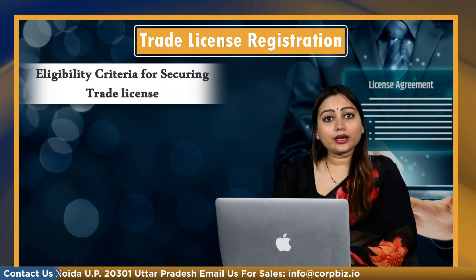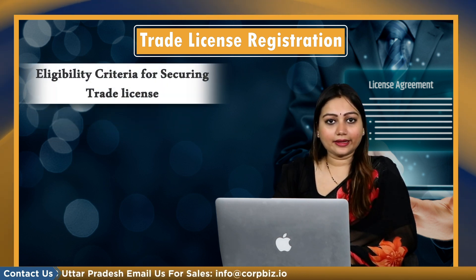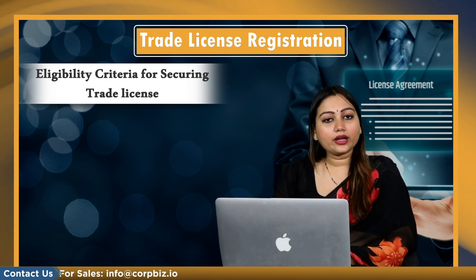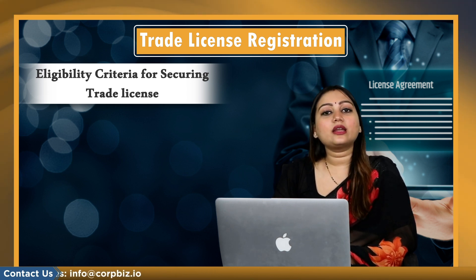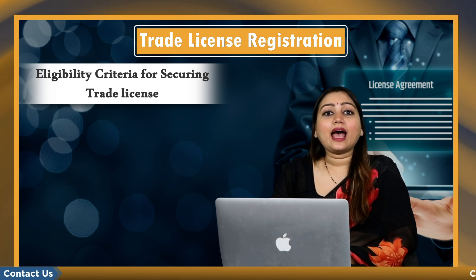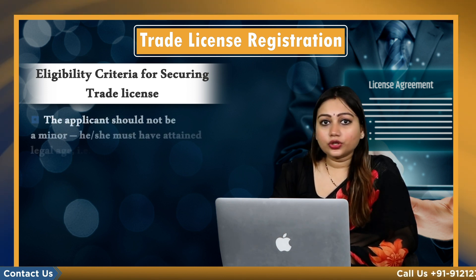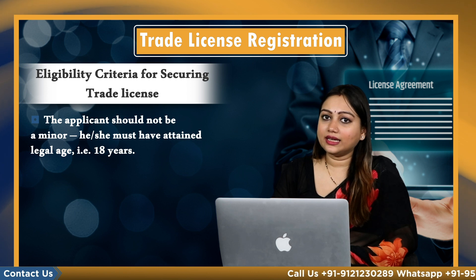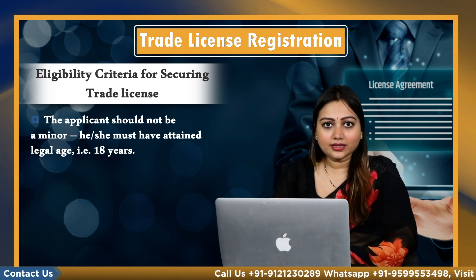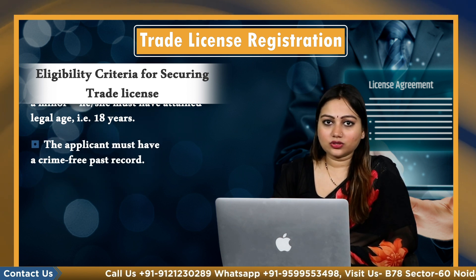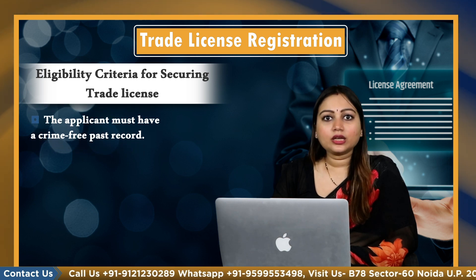What is the eligibility criteria for securing a trade license? The eligibility conditions can be enumerated as follows: the applicant should not be a minor — he or she must have attained the legal age of 18 years. The applicant must have a crime-free past record. The business should have legal status.